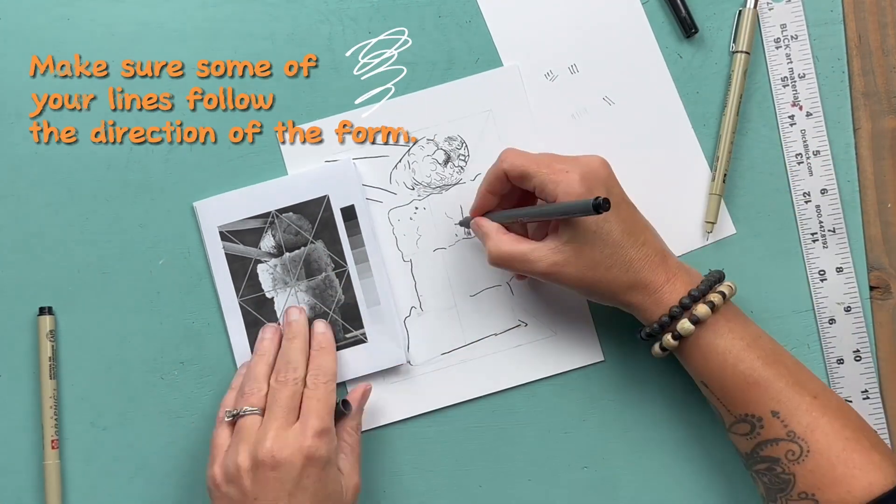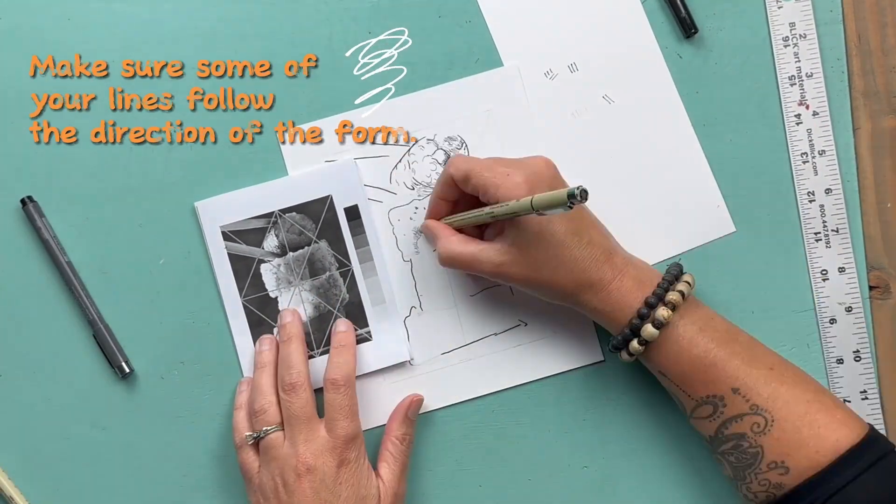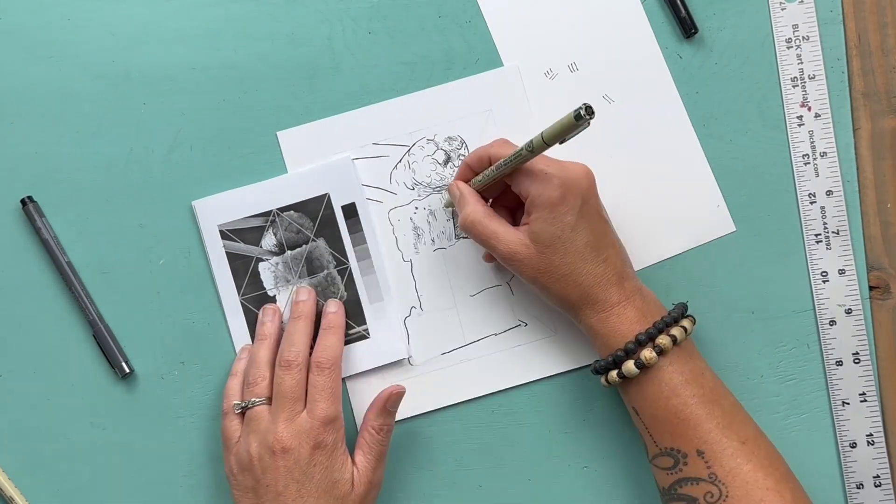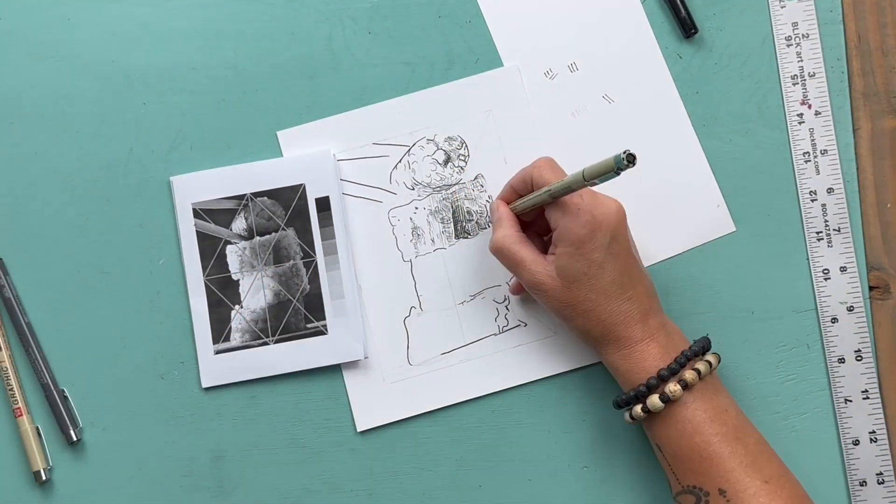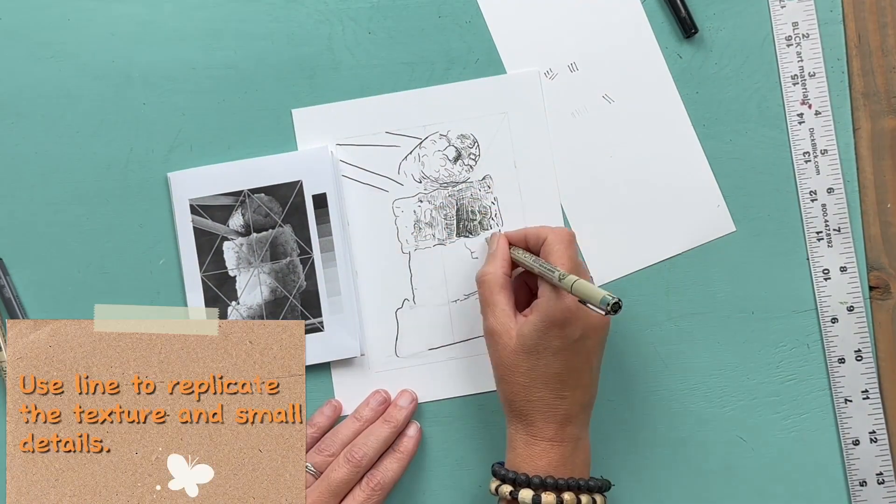The right side of the sushi is a little bit darker, so I'm using some hatching to get those darker values yet I'm also defining the texture at the same time.